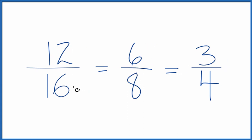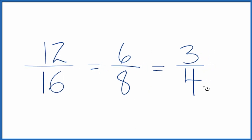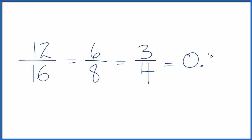If you divide 12 by 16, 6 by 8, or 3 by 4, you get the same answer, 0.75. That's because they're equivalent.